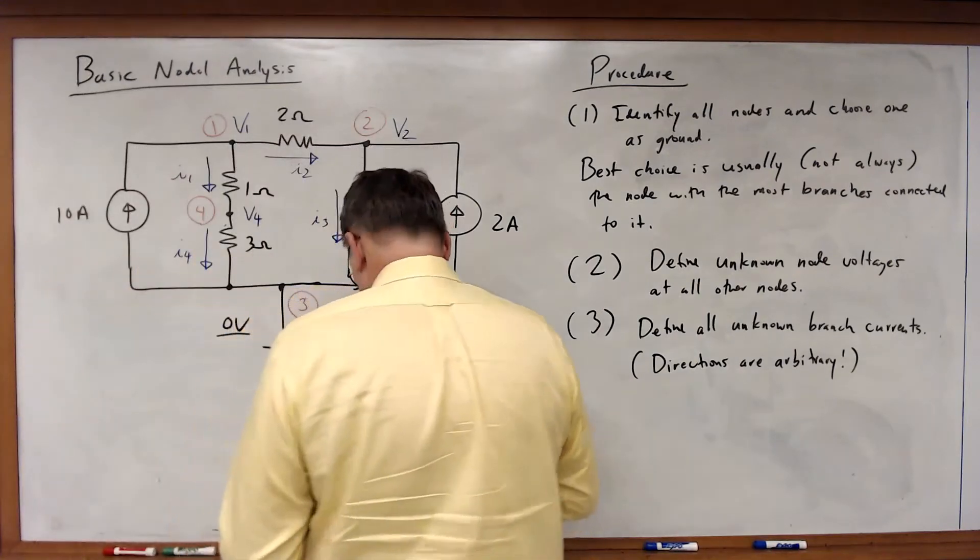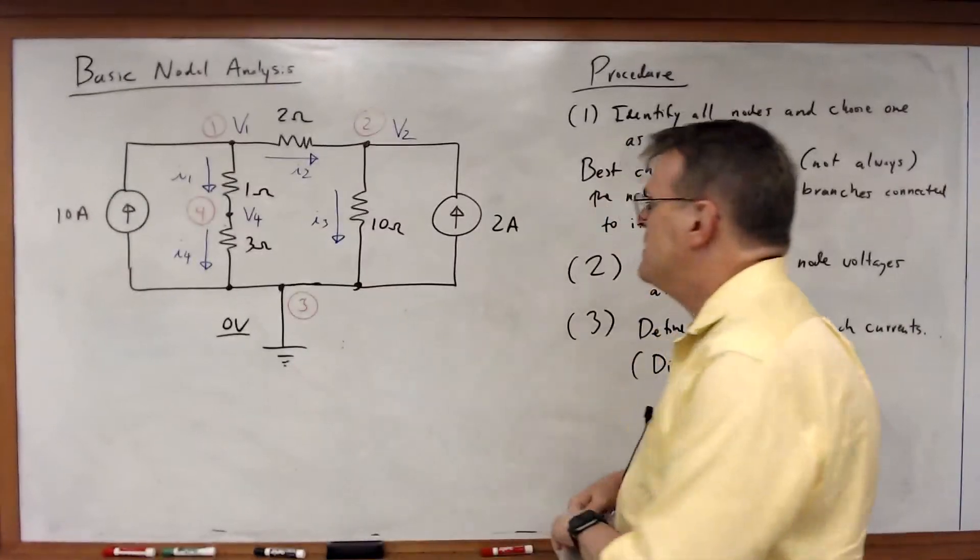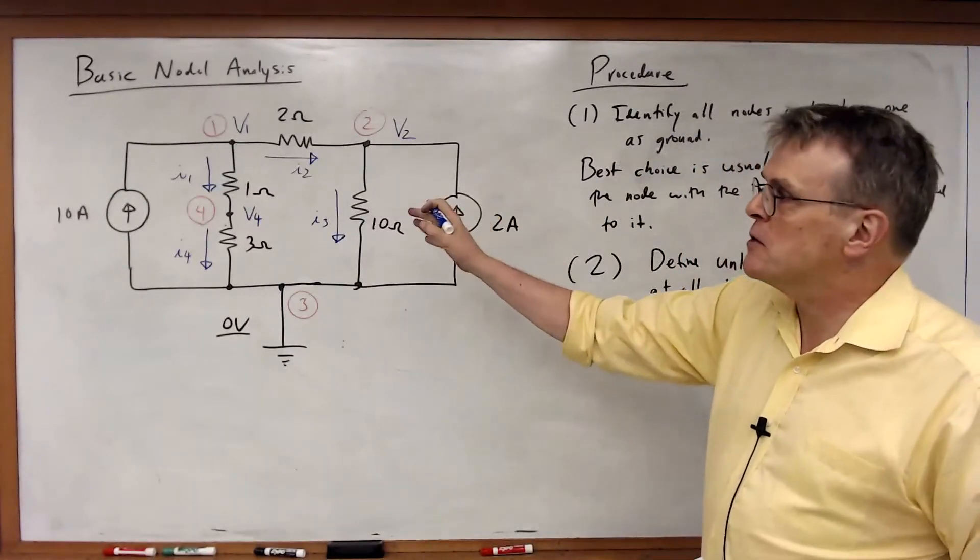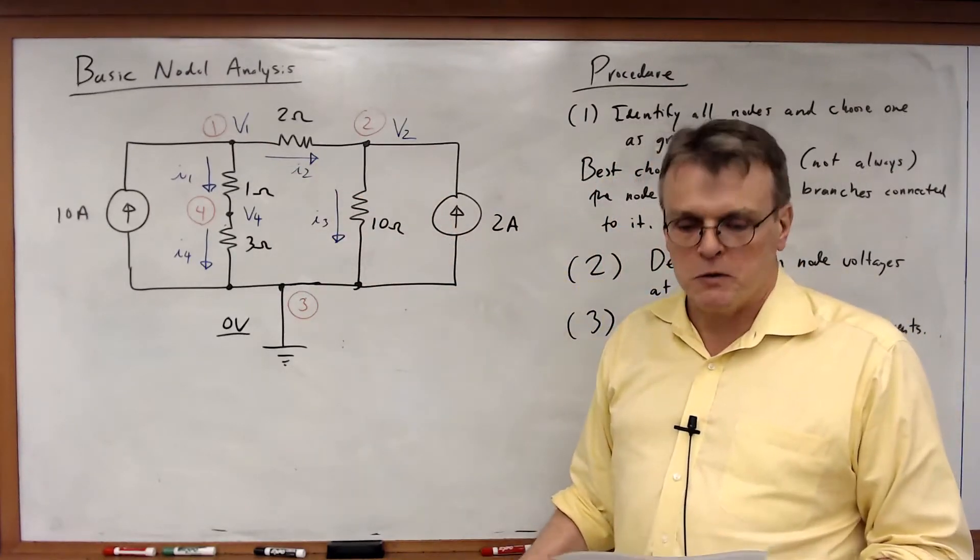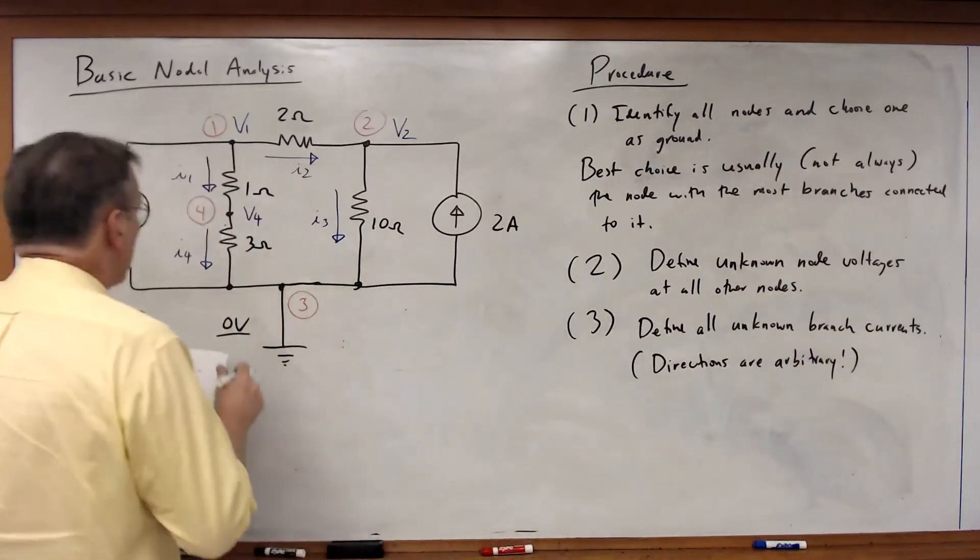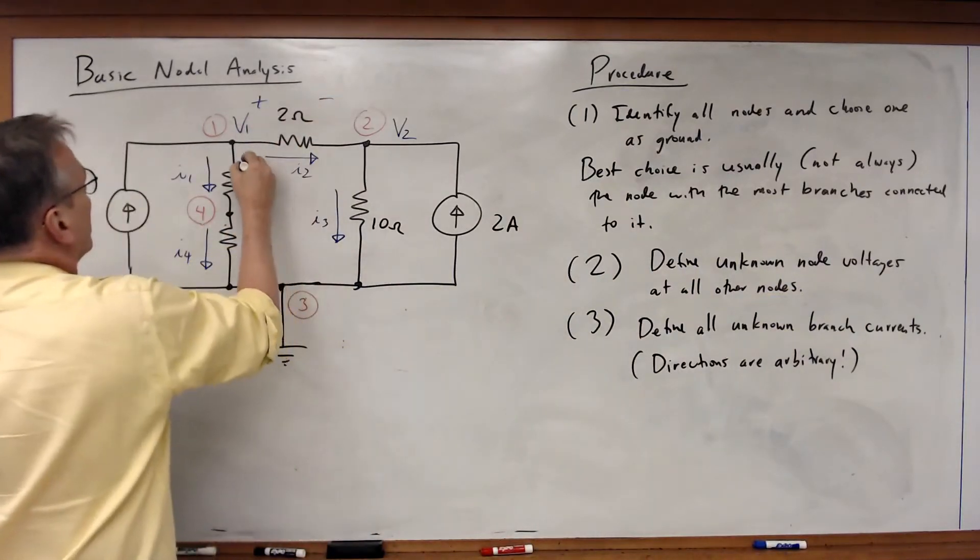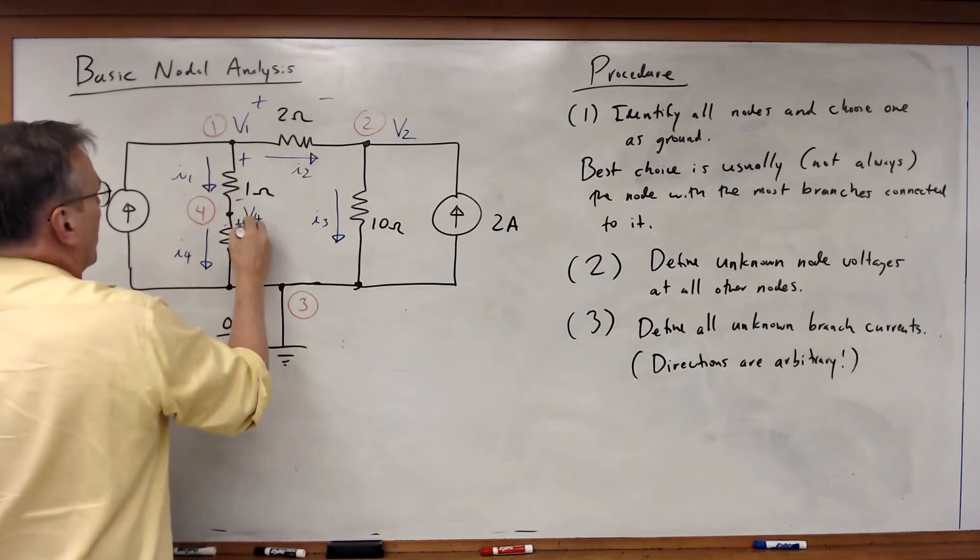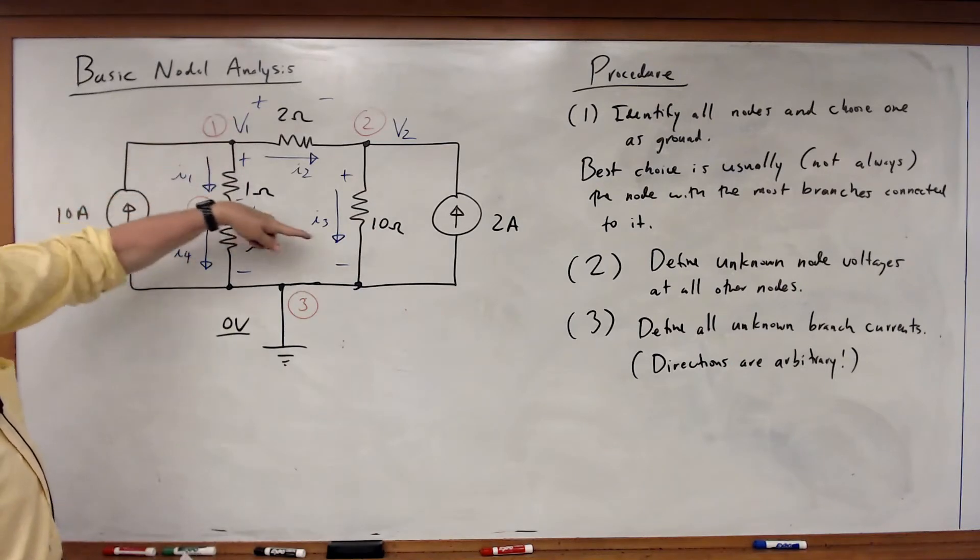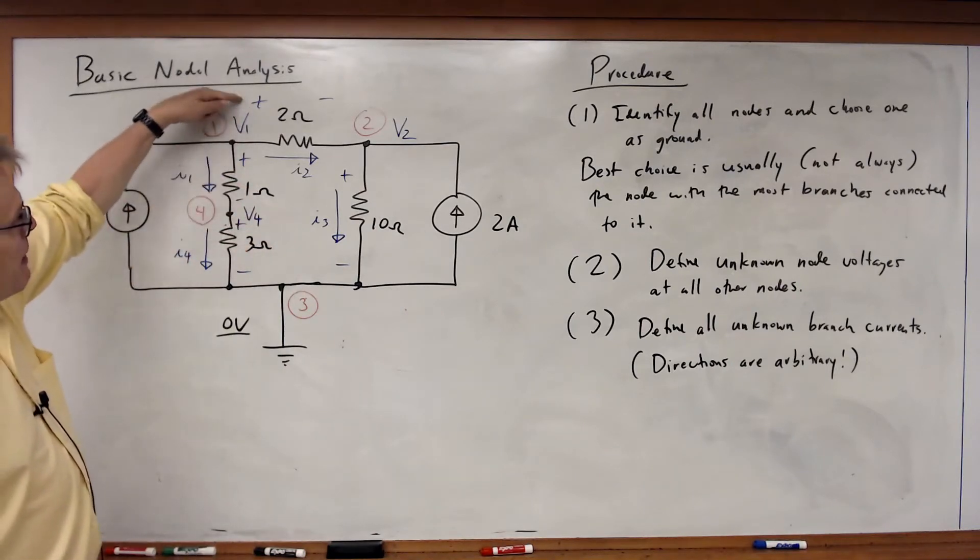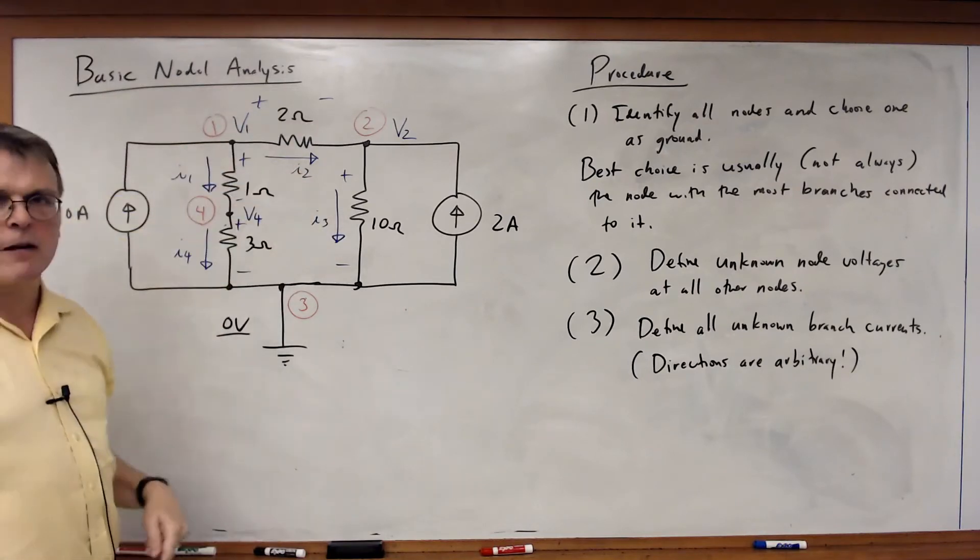Now, because I've done that, because I have chosen these directions, that means the passive sign convention also tells me what the voltage drop across each of those resistors needs to be. So notice for each resistor, I'm now following the passive sign convention. Positive to negative. Positive to negative. Positive to negative. According to the direction of the current that I chose.